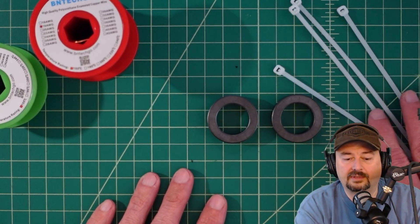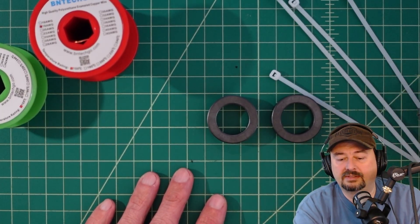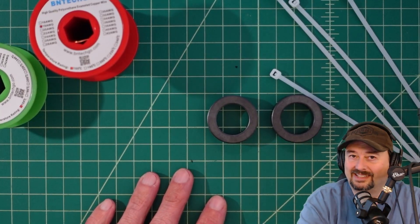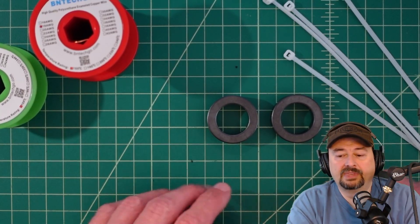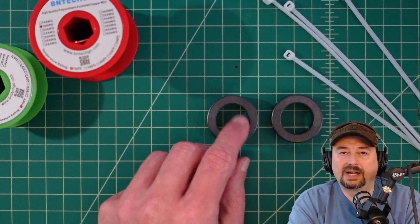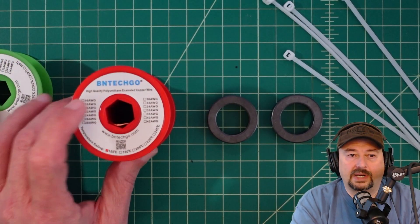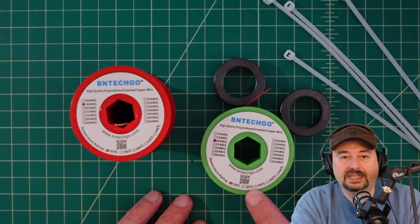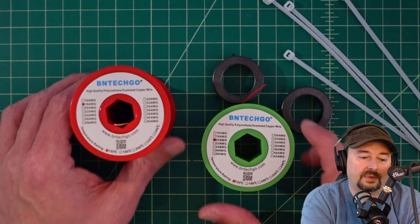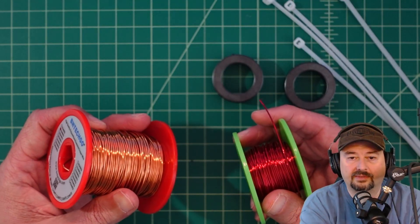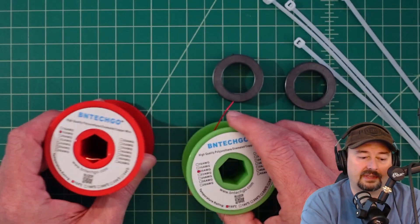Whenever I've wrapped toroidal cores I use these zip ties. I use them to hold my wire on so I get a nice tight clean wrapping. For the wire we're going to use, I'm a big fan of this Bianteco wire. Here we have two different spools of magnet wire.